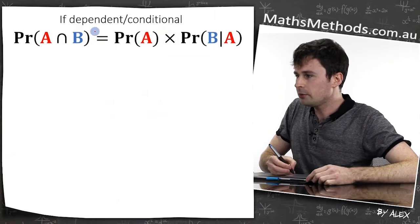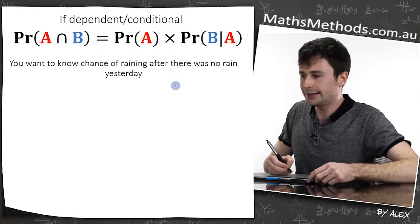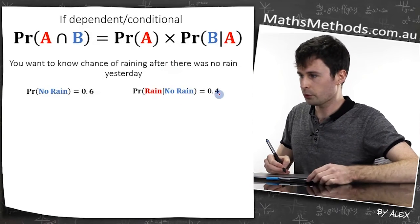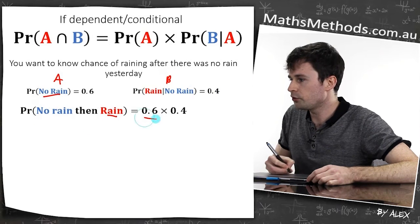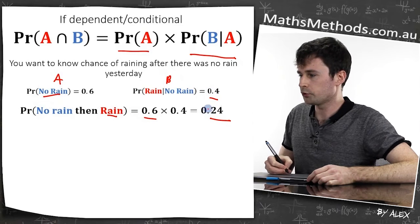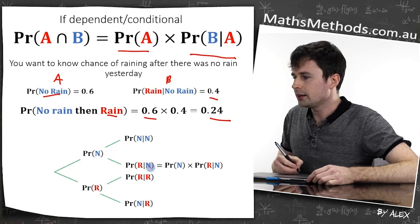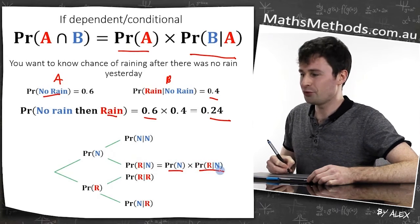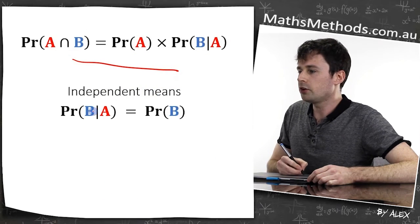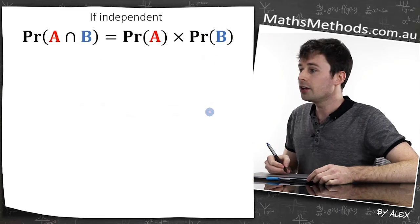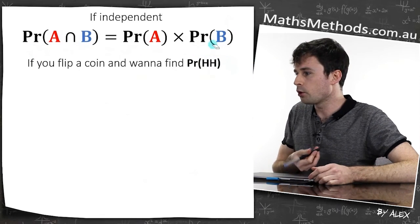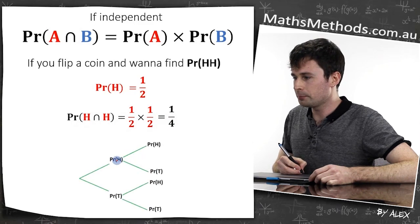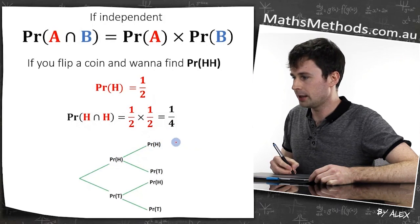For multiple events, if you want to know the chance of it raining after there was no rain yesterday: say the probability of no rain is 0.6 and the probability of rain given no rain is 0.4. The probability of no rain then rain is 0.6 times 0.4, which gives 0.24. In general: P(not rain then rain) equals P(not rain) times P(rain | not rain). If events are independent, P(B|A) equals P(B), so the rule simplifies to P(A) times P(B). For example, flipping a coin and getting heads then heads: half times half equals a quarter.